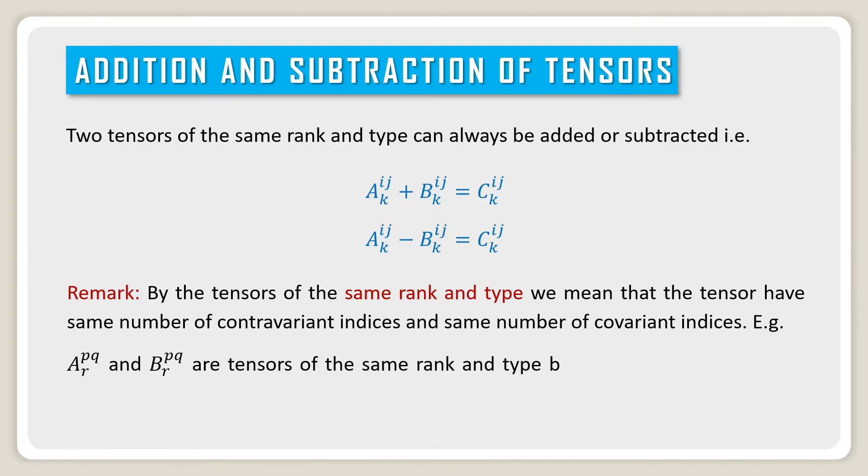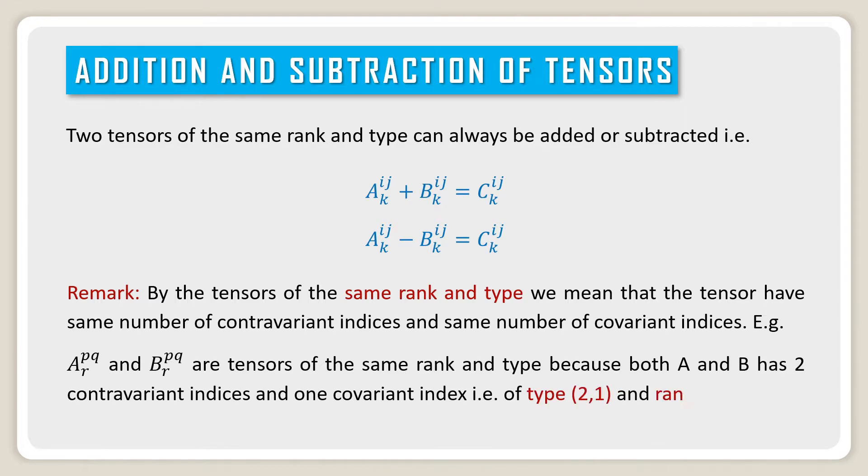For example, A^PQ_R and B^PQ_R are tensors of the same rank and type because both A and B have two contravariant indices and one covariant index, that is, of type (2,1) and rank 3.